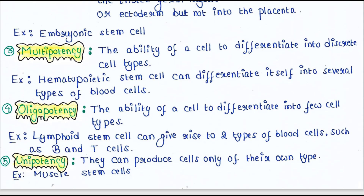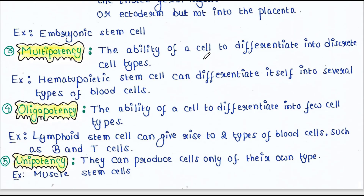Next is multipotency. The ability of a cell to differentiate into discrete cell types is called multipotency. Hematopoietic stem cells can differentiate into several types of blood cells. Hence, hematopoietic stem cells have multipotency.